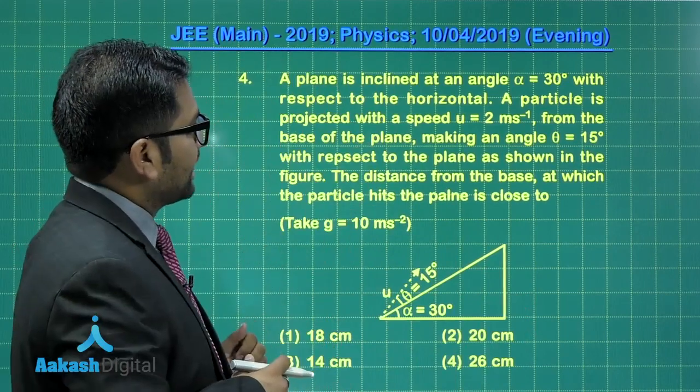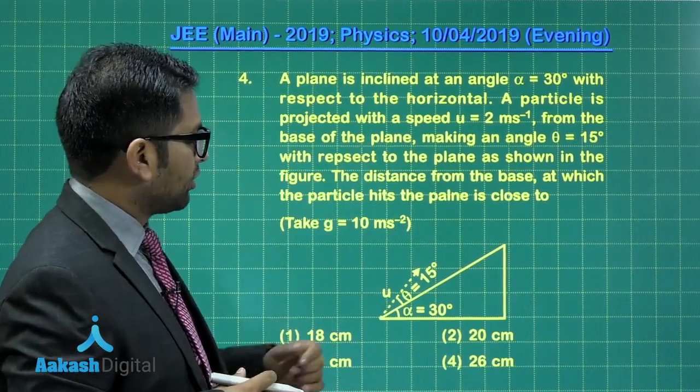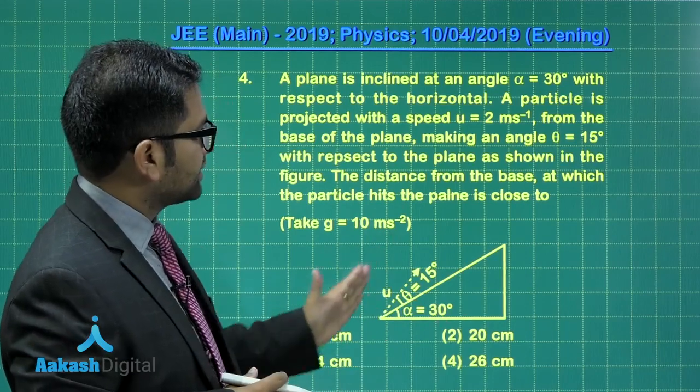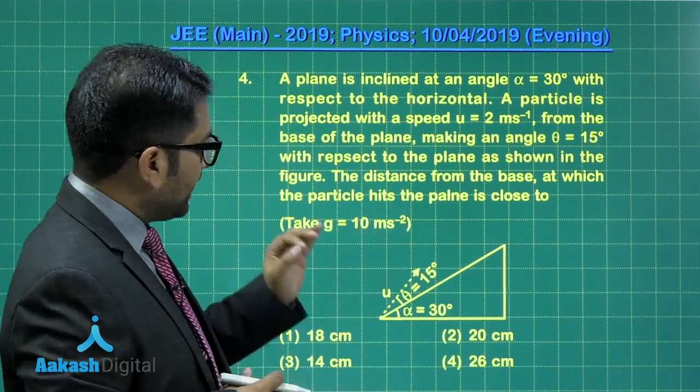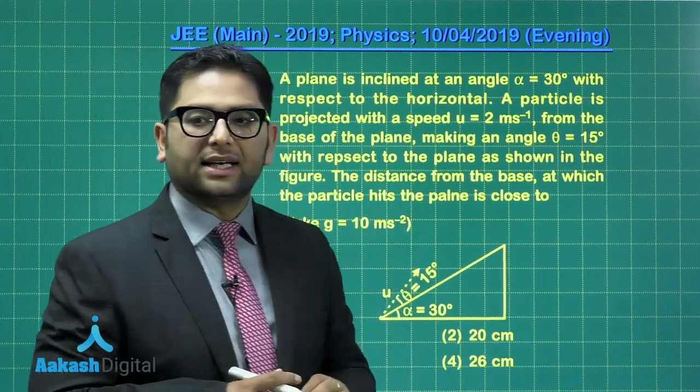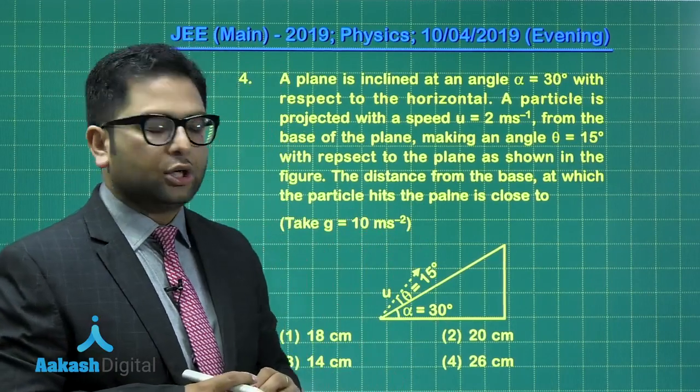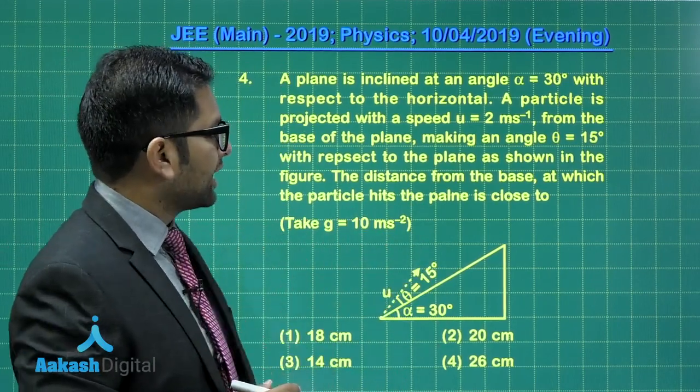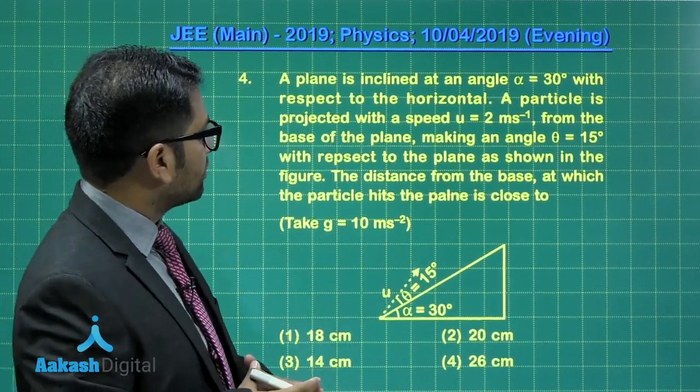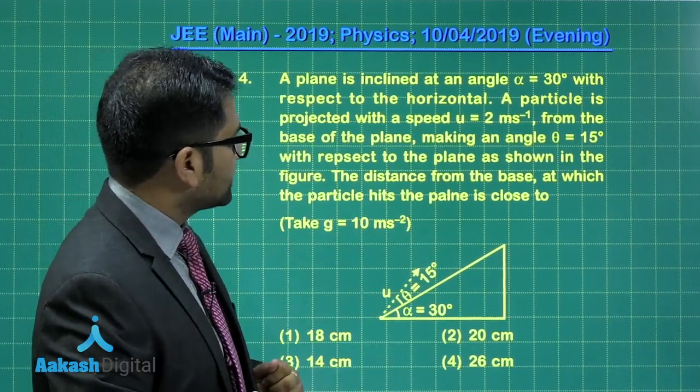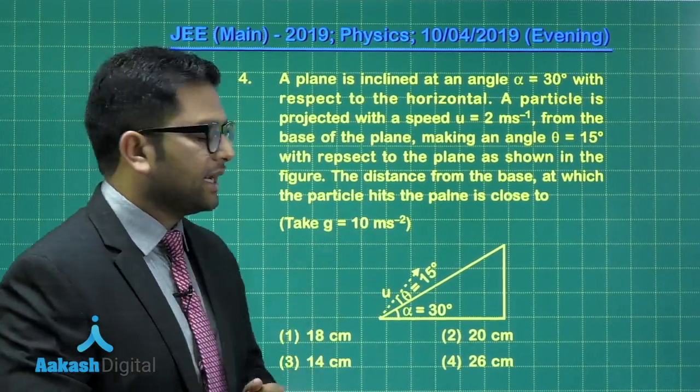A plane is inclined at an angle of 30 degrees with respect to the horizontal, and a particle is given a speed of 2 meters per second. The angle of projection is 15 degrees with respect to the inclined plane, and we need to calculate the distance from the base at which the particle hits the plane.